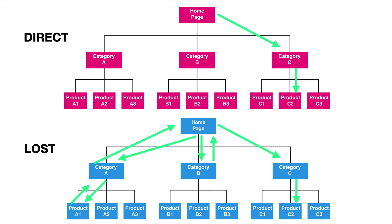The easiest way to reach the product is just: homepage, category C, product C2. But if you get lost, you might go to category A, product A1, realize you made a mistake, backtrack through category A, back to the homepage, head to category B, then back to the homepage, and finally over to category C and the product you're looking for. So how can we take these two understandings — the perfect route and the lost route — and turn that into something quantifiable, in the same way that number of clicks or time on task is quantifiable?